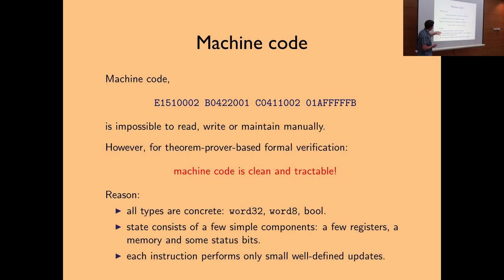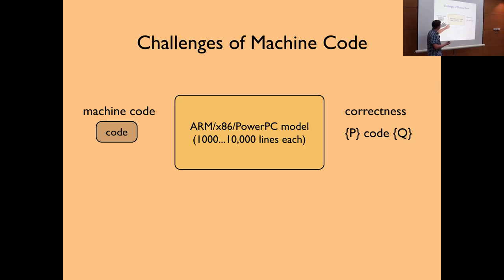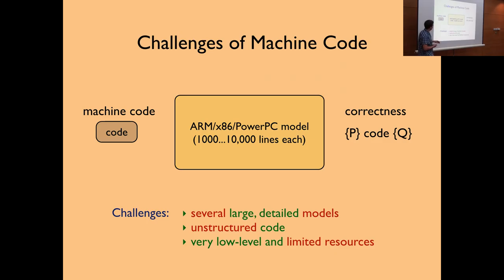Machine code is very simple — all types are very concrete. The state consists of only a few components: memory, registers, status bits, and a few other things. Each instruction performs very small, well-defined updates on the state. The challenge is that if you're given some machine code and have a correctness statement to prove, you have to deal with these thousand-line definitions of what it means to run ARM machine code. There are also several architectures — ARM, x86, PowerPC, MIPS — with large, detailed models that seem different in ad hoc ways. The code is unstructured, at a very low level, with limited resources.